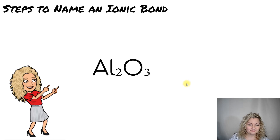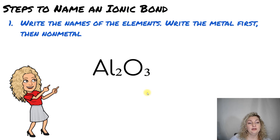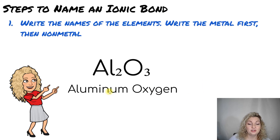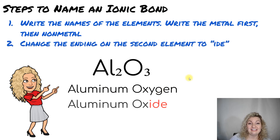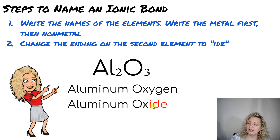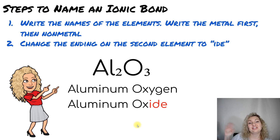Let's try one more. So we have Al₂O₃ — how do we name it? We're going to write our elements in order: aluminum and then oxygen. But we don't finish there. We're going to change the ending on the second element to '-ide'. So instead of oxygen, we write oxide. So it's now aluminum oxide. And that's it, you guys. Thank y'all so much for watching. See you next time.